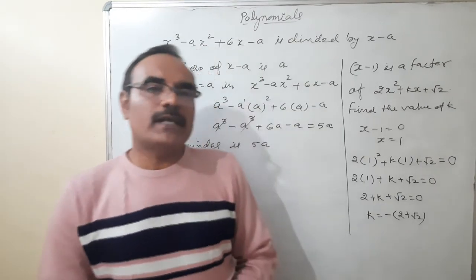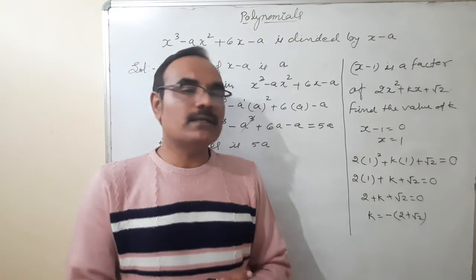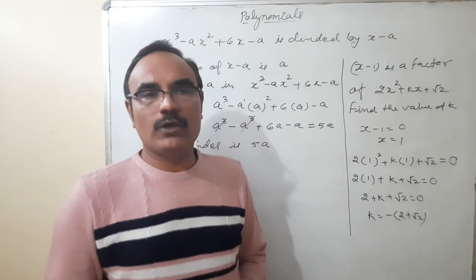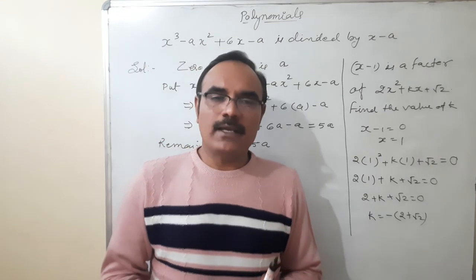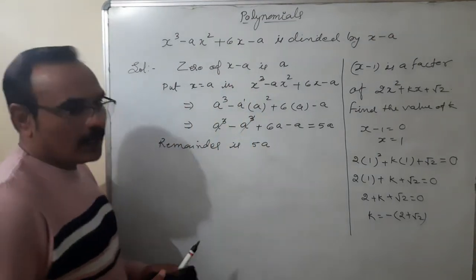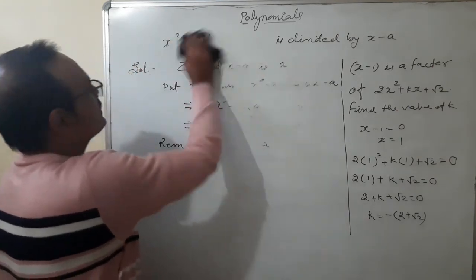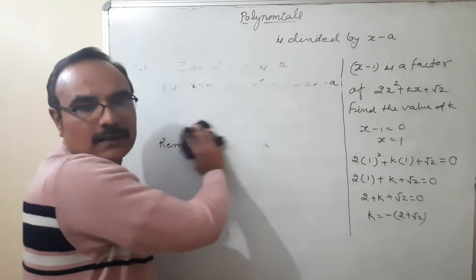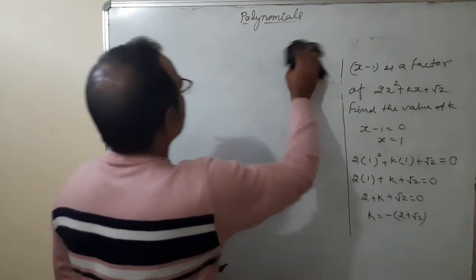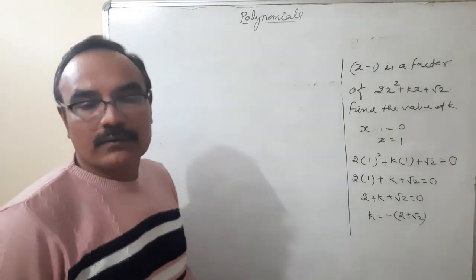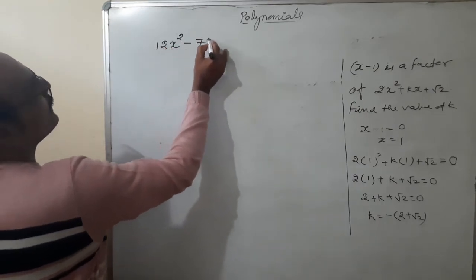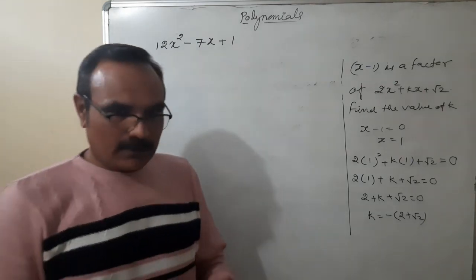Now I would like to discuss the factorization of quadratic and cubic polynomials. I am taking one example first — a quadratic polynomial — to show how to factorize it and find its zeros. Then we will take a cubic polynomial. The example is: 12x² minus 7x plus 1.